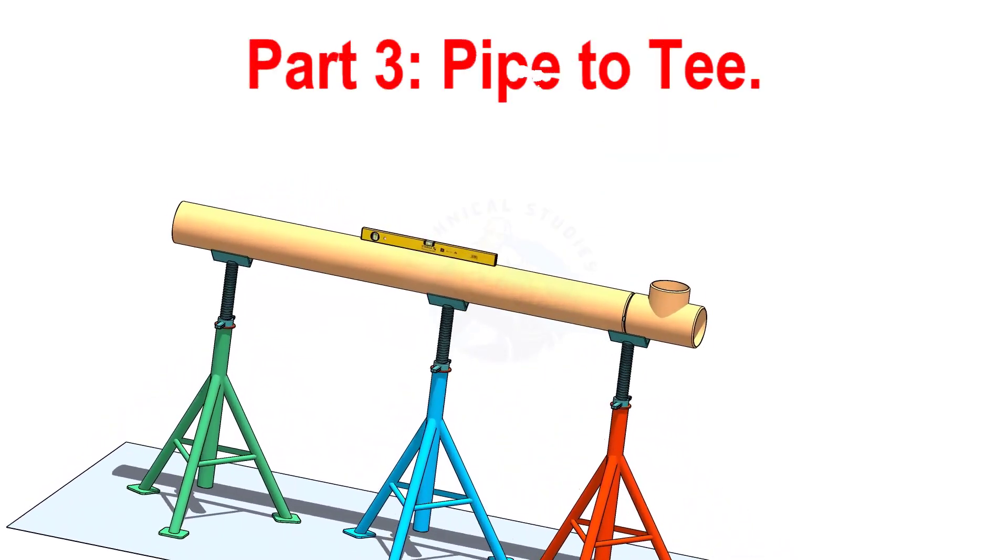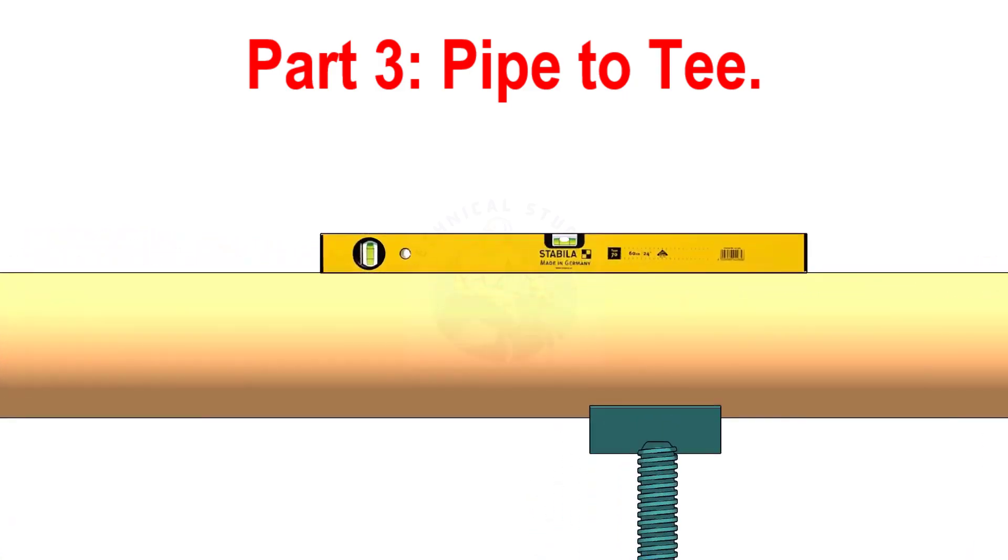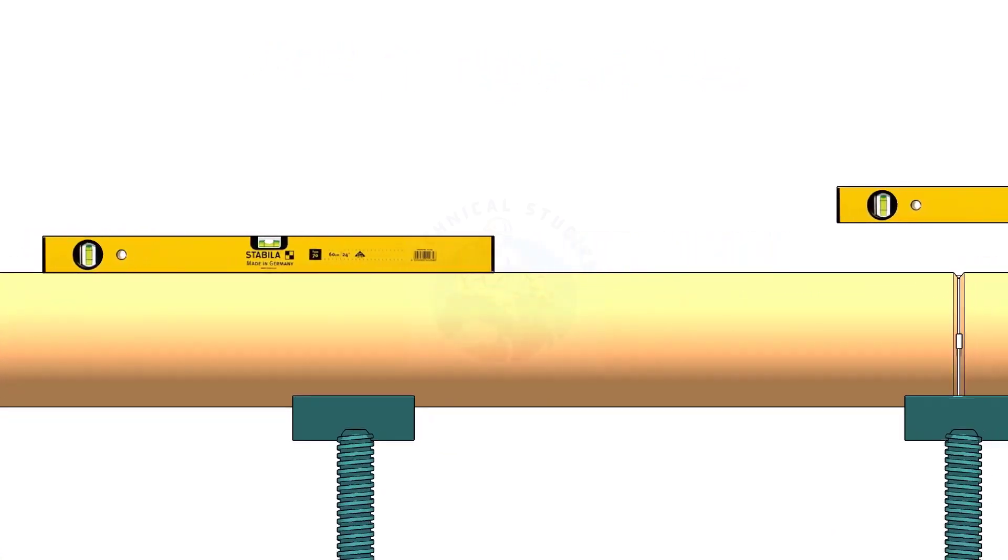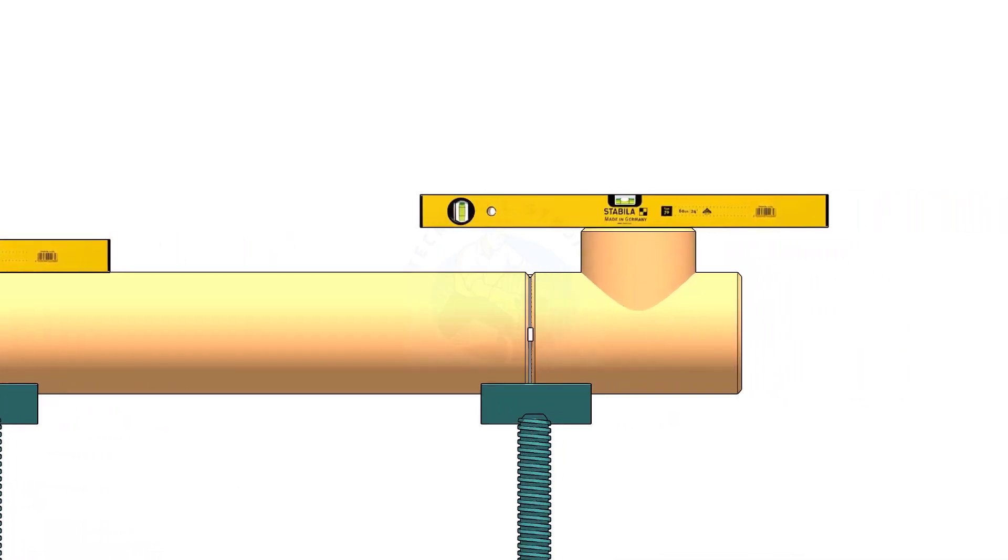When you check a pipe to T fit up, level the pipe first. Then check the level of the T.